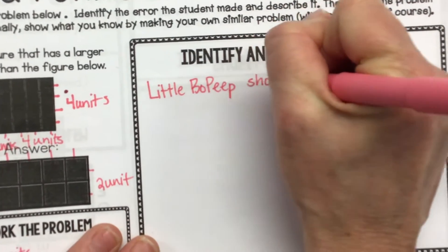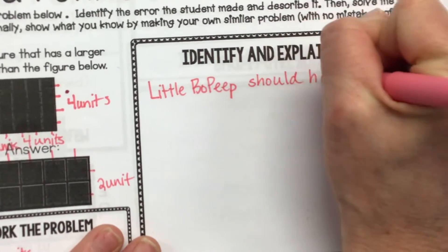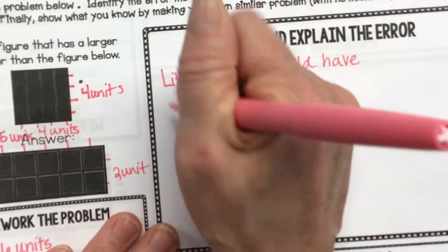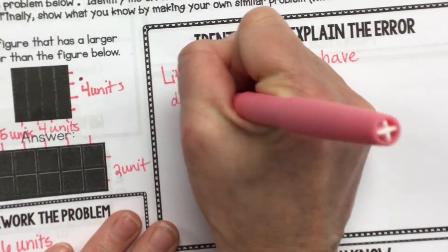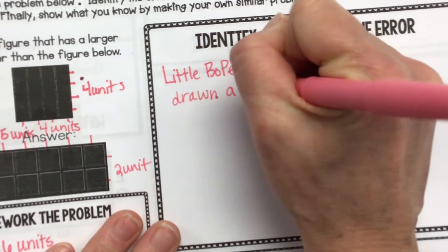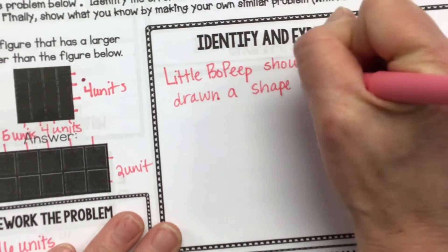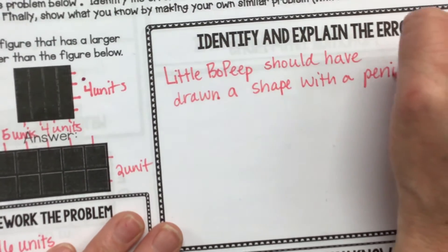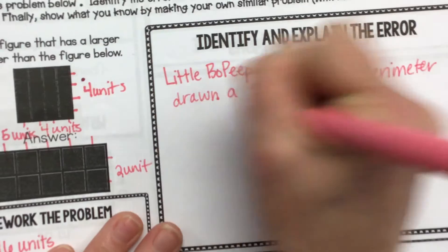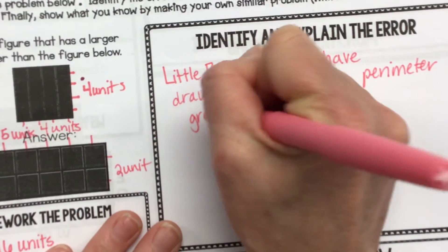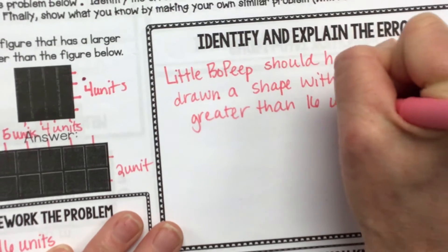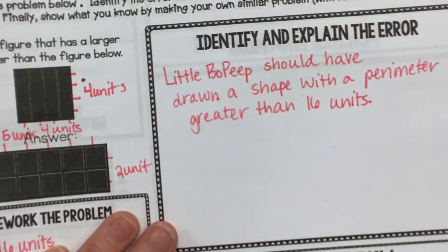Should have what, Addy? Should have a perimeter of 18 or 20 to be greater than the first shape. With a perimeter greater than what? 16. Greater than 16 units.